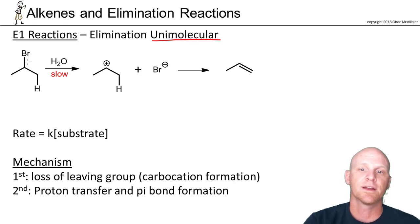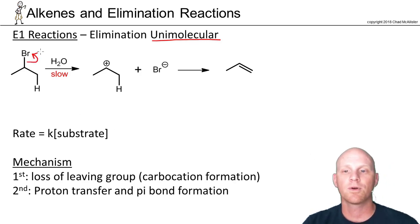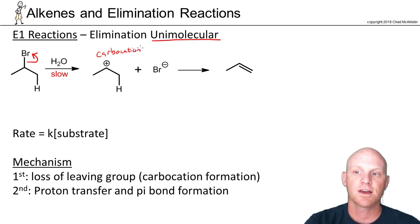If we take a look at this one here, the first step is the exact same first step as SN1, and that's carbocation formation. The leaving group leaves, leading to a carbocation here. So just like SN1 was all about the carbocation, E1 is also all about the carbocation.